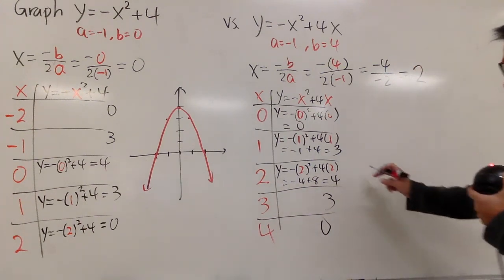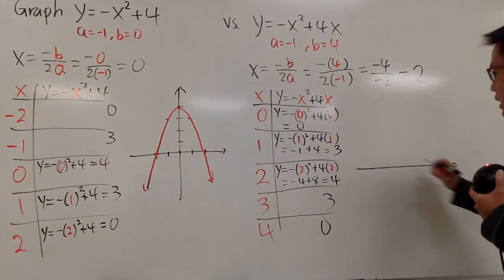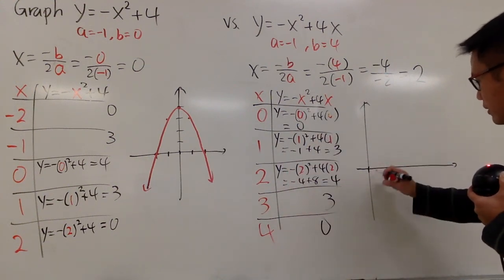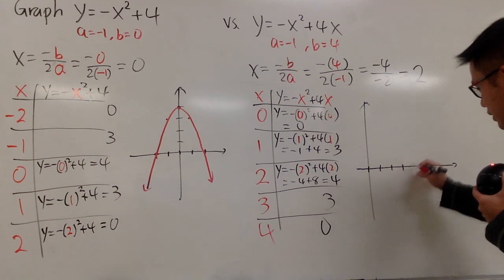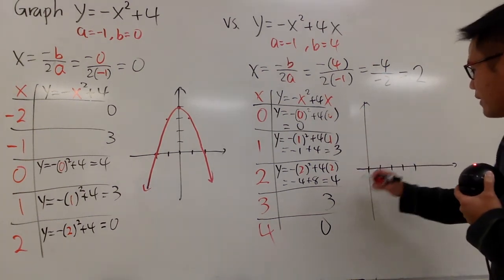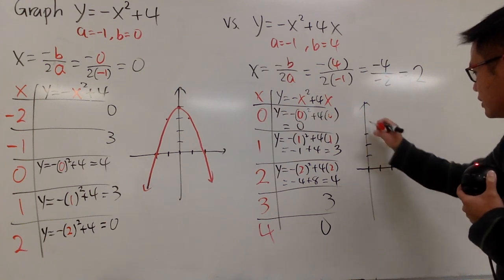And we can just make our graph right here. And I just need to care about the positive x values like 0 and then 1, 2, 3, 4. And I also need to go up to 4 for the y value, so let's see. 1, 2, 3, 4.